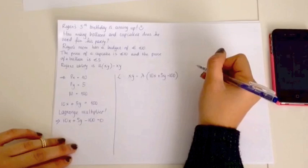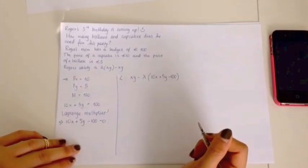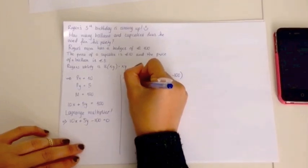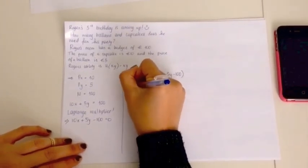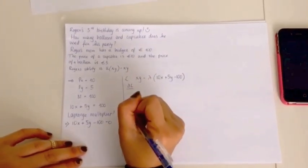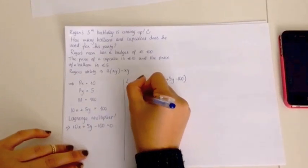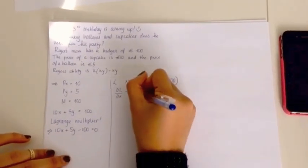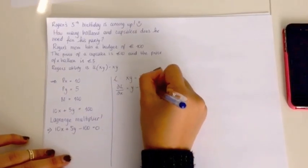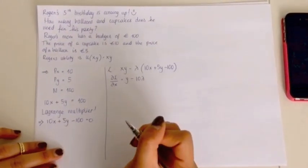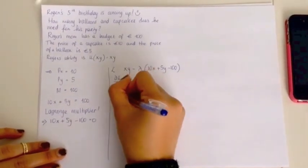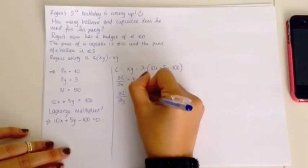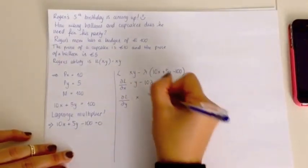Okay, then we have to take the partial derivative according to each variable in the equation. So, partial derivative of L according to X will equal Y minus 10 Lambda. And then we do the same for Y. So, partial derivative of L according to Y equals X minus 5 Lambda.